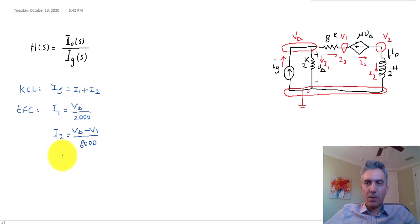And for the dependent source, we have V1 minus V2 equals mu times V_delta. And then finally the current I2 for the inductor 2 Henry: the voltage V2 minus V1 is equal to 2Ls times I2, and this is with the assumption that there is no energy stored in the inductor, so the initial condition is zero.